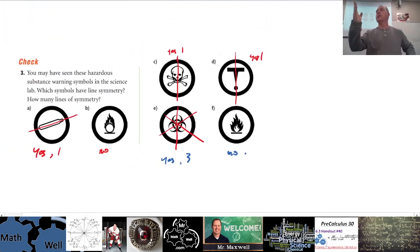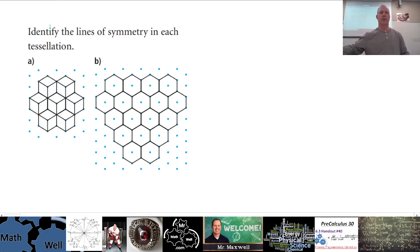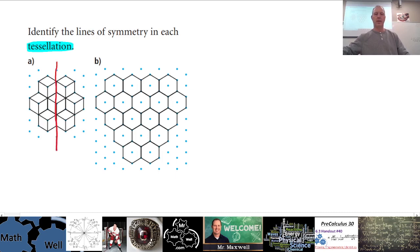Number four is about tessellations. A tessellation is basically a tiling of a surface — a collection of geometric shapes that fully covers a surface with no gaps or spaces, often made of identical shapes. There are lines of symmetry in tessellations. For the first one, there seems to be more than one: one this way, another this way, and maybe another — so one, two, and three lines of symmetry.